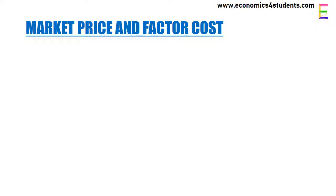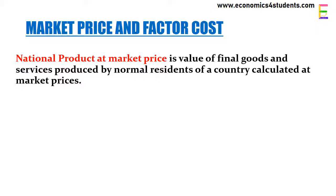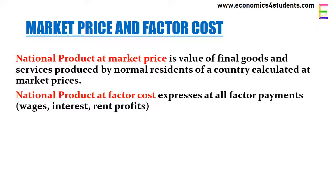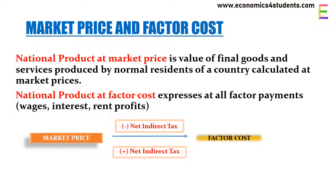National income or national product can be measured at market price as well as factor cost. National product at market price is estimated as the value of all final goods and services produced by normal residents of a country in a year. National product at factor cost is estimated as the sum total of factor income generated in a year. We can convert market price to factor cost by deducting net indirect tax from market price, and by adding net indirect tax to factor cost we get market price.